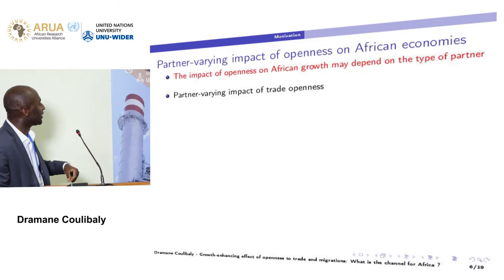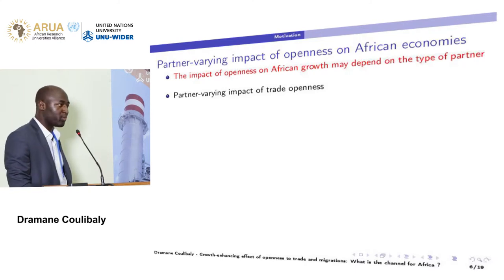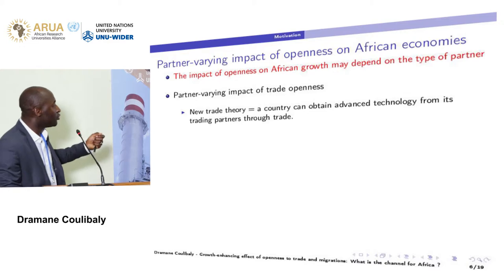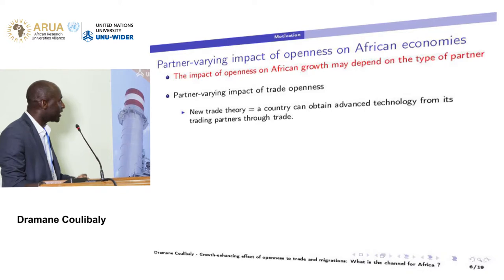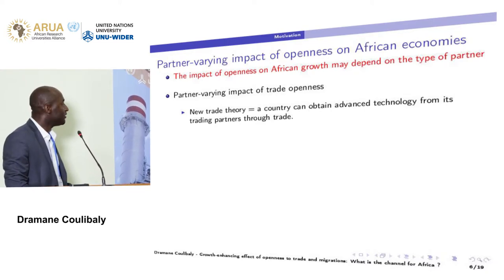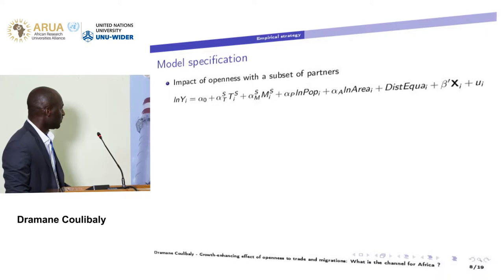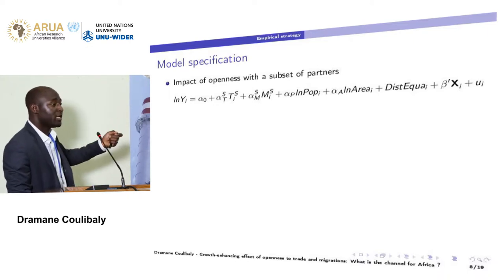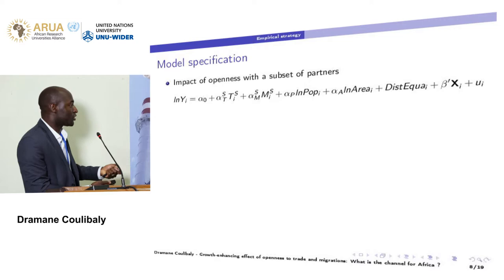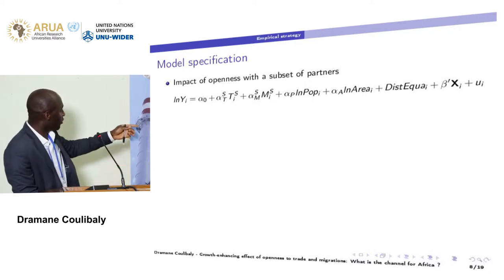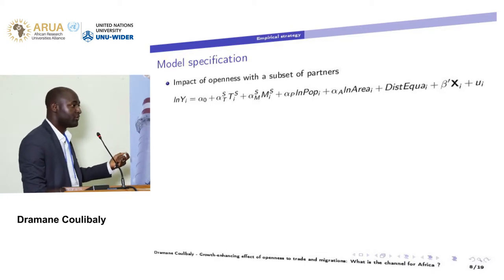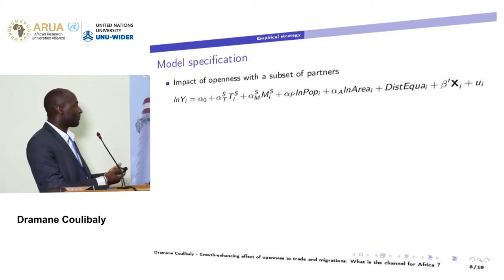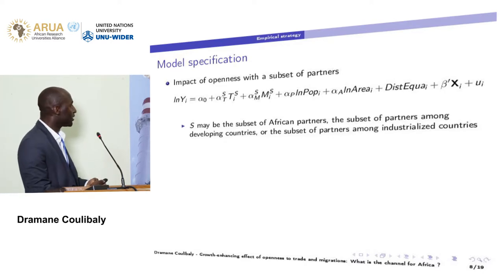Particularly concerning the partner environment, the impact of trade openness — if you rely on new trade theory — a country can obtain advanced technology from its trading partner through trade. To examine the impact as a function of a subset of partners, we conduct the following regression focusing on a particular subset of partners: the subset of African partners, the subset of partners among developing countries, or the subset of partners among industrial countries.